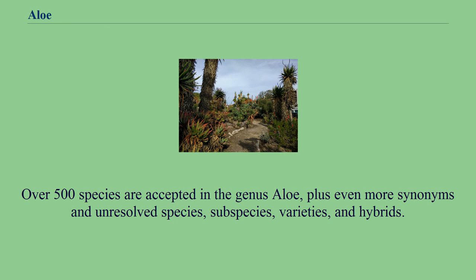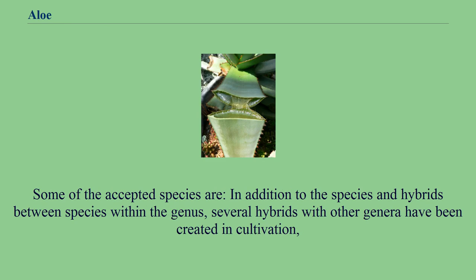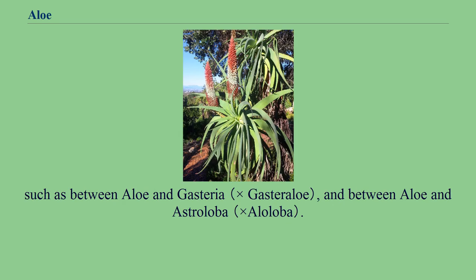Over 500 species are accepted in the genus aloe, plus even more synonyms and unresolved species, subspecies, varieties, and hybrids. In addition to hybrids between species within the genus, several hybrids with other genera have been created in cultivation, such as between aloe and Gasteria, and between aloe and Astroloba.